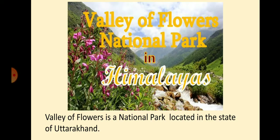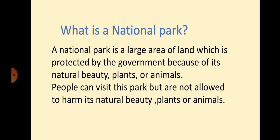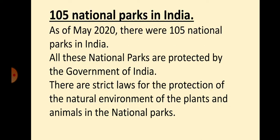Children, do you know that Valley of Flowers is a national park? Now what is a national park? A national park is a large area of land which is protected by the government because of its natural beauty, plants and animals. People can visit this park but are not allowed to harm its natural beauty, plants and animals. In India, as of May 2020, there are 105 national parks. All these national parks are protected by the government of India, and there are strict laws for the protection of the natural environment, plants and animals in these national parks.